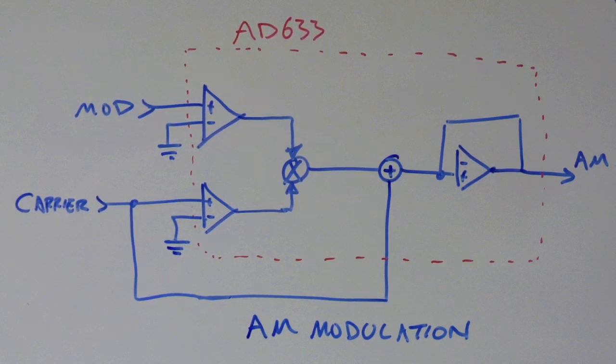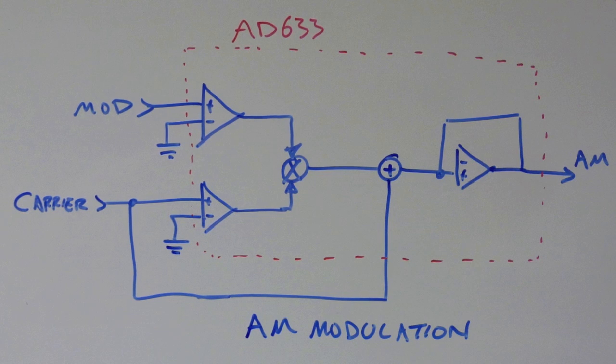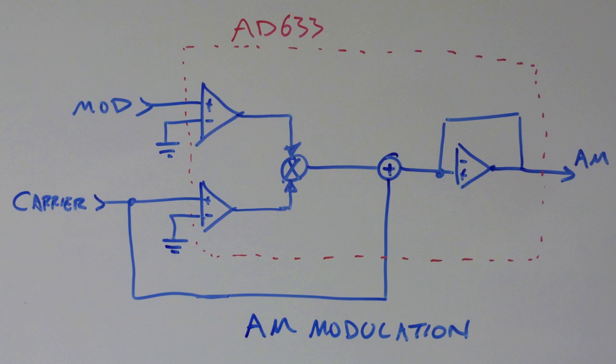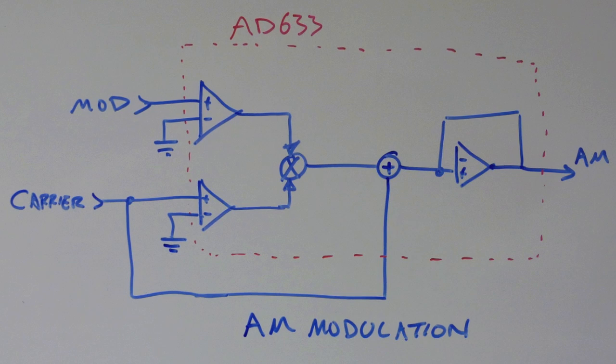What's going on is the modulation, which is the sound from the iPod, goes into one side of the multiplier and then the carrier signal goes into the other side. Now, if you didn't have this feed forward bit at the bottom of the circuit, you would have no carrier when you had silence on your audio.